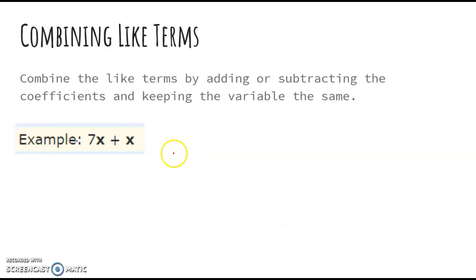So combining like terms. We're going to start this off simple. To combine the like terms, you do it by adding or subtracting the coefficients, that's the number in front of the variable, and keeping the variable the same. So here I have 7x and x. So I'm going to combine the coefficients. Here there is no coefficient, but we know that that is a 1. So I'm going to combine those two. 7 and 1 make 8, and I keep the variable.